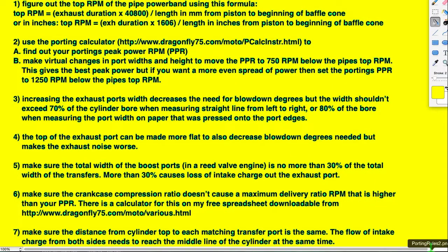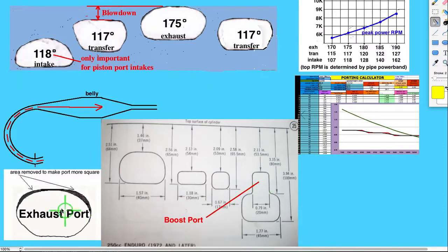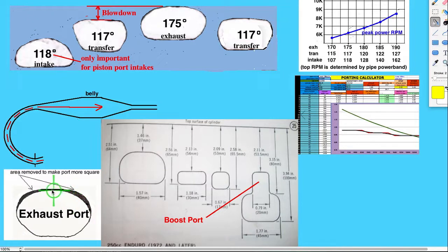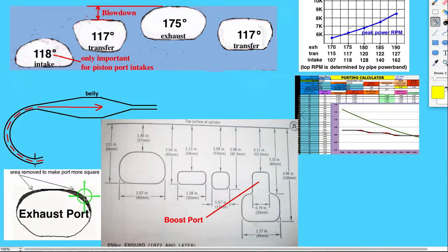If you like this shape right here — very roundish — that's typical for street or trail. If you want to turn a trail bike into a motocross bike, you want to raise it up so that this section has a longer flat area and is wider from here to here.